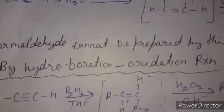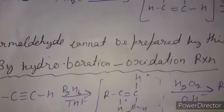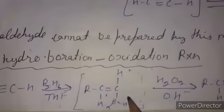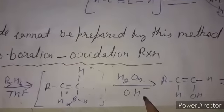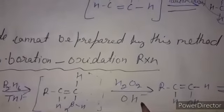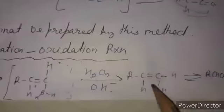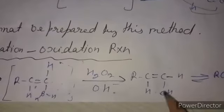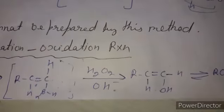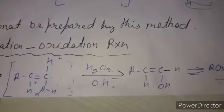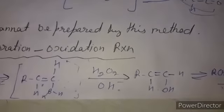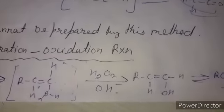The next method is hydroboration-oxidation. When we react an alkyne with diborane in the presence of the solvent tetrahydrofuran, we obtain an intermediate product. Upon basic hydrolysis in alkaline peroxide medium, an enol product forms which is unstable and easily converts to an aldehyde. The product again depends on the starting reactant.